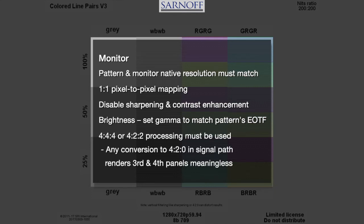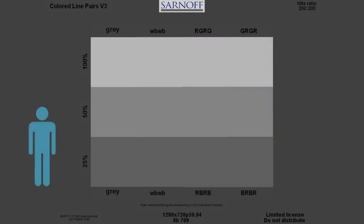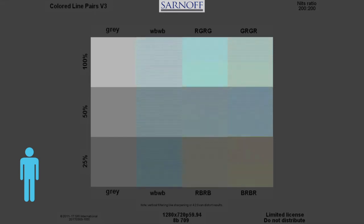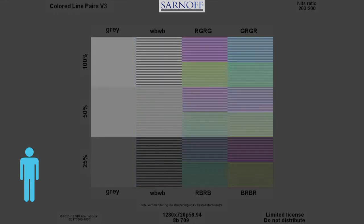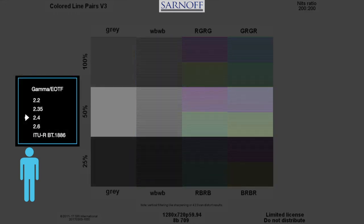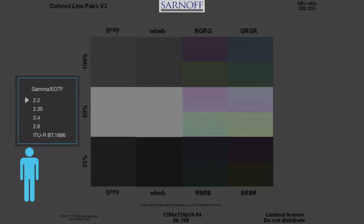444 or 422 processing must be used. Any conversions to 420 in the signal path will render the third and fourth panels meaningless. This pattern should be viewed from a distance so the line pairs merge optically. Not all rows may track gamma equally. If that is the case, try to get panels 1 and 2 of the middle row to match, then use only that row for the rest of the test.